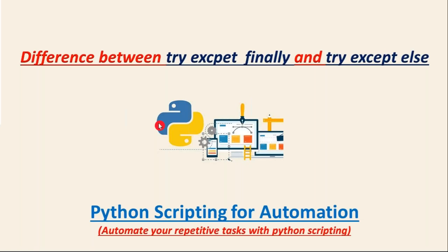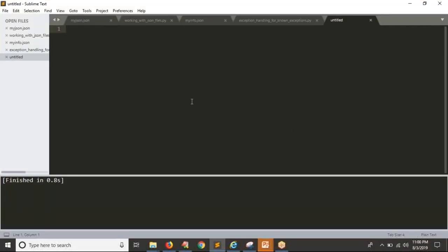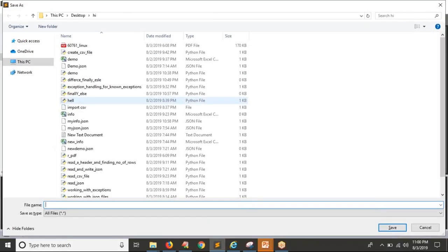We are going to see the difference between try/except/finally and try/except/else blocks. We already know simple try and except, try/except with exception as E, and also adding known exceptions. Let me open my editor and save it as a simple script called 'differences'.